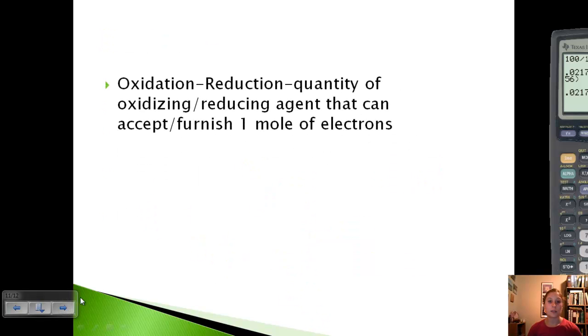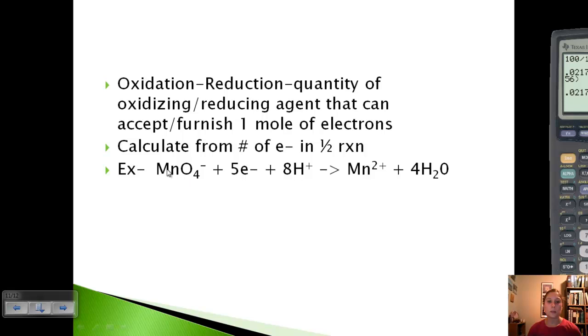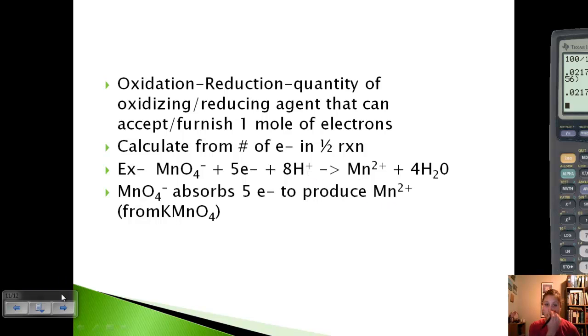The other type is oxidation-reduction. Instead of looking at hydrogens, we're looking at electrons that get furnished based on the half reaction. Here we've got MnO4- plus 5 electrons and 8 H+ producing Mn2+ and 4 H2O. The permanganate absorbs 5 electrons from potassium permanganate to produce the manganese ion.